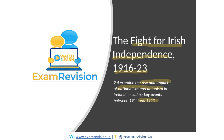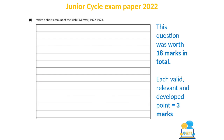We have to examine the rise and impact of nationalism and unionism, but this topic will focus on the key events from 1916 to 1923. Before we get started, I'm going to do a brief analysis of the Junior Cycle exam paper from 2022. An interesting question came up — unfortunately the exam paper did not have marks beside the question.